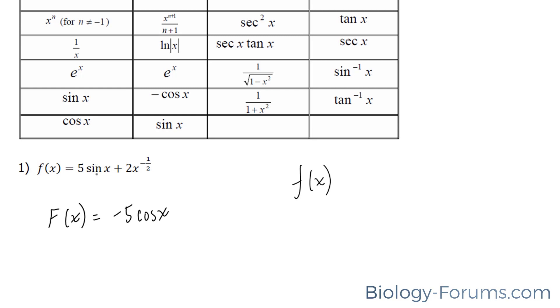So our answer becomes negative 5 cosine x. That represents the first term. The second term is easy. You increase the exponent by 1, and then you take that number and put it in the denominator. Let's increase negative half by 1, which gives us positive half.